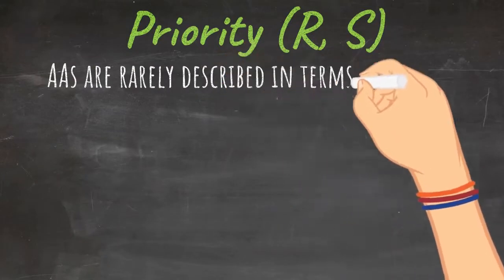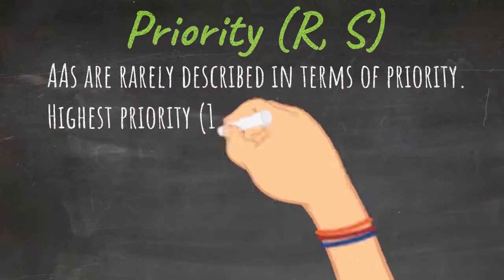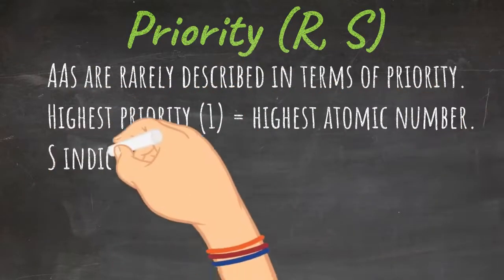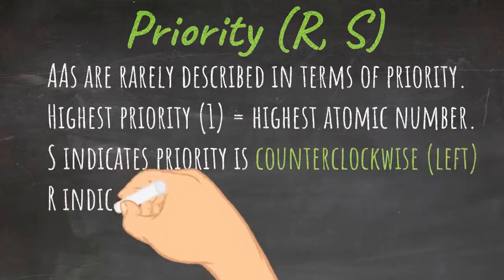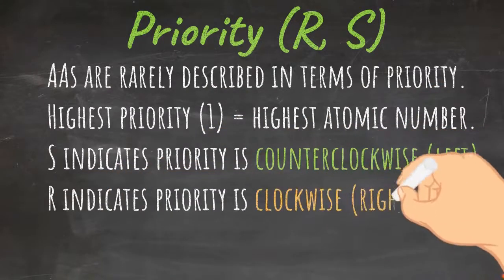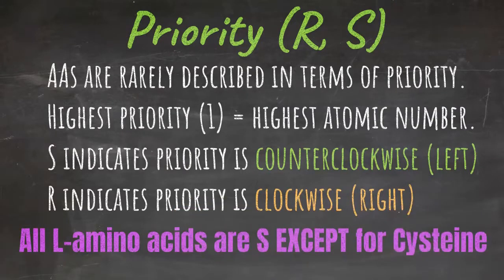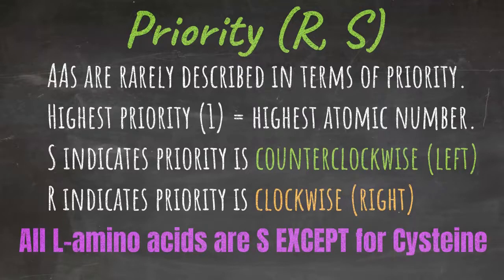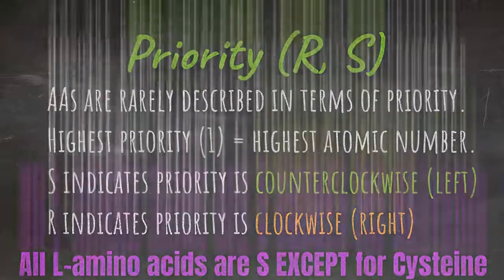Amino acids can also be described in terms of priority, although this is very rare on the MCAT. The highest priority is given to the atom with the highest atomic number. S indicates priority is counterclockwise going to the left, and R indicates priority is clockwise going to the right. All L amino acids have S priority, except for cysteine, because cysteine begins with a sulfur, which has a higher priority than nitrogen, carbon, or hydrogen.